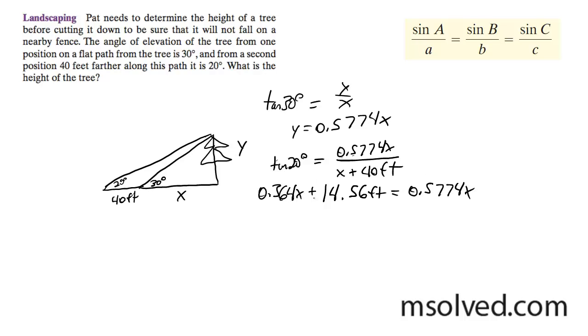I'm going to subtract 0.364 from the right side here, and that gives me 0.2134x, roughly, equals 14.56 feet. And then I'm going to divide through by that, and x equals 68.23 feet.